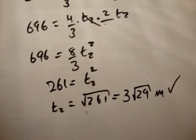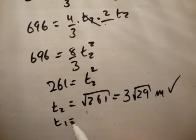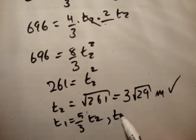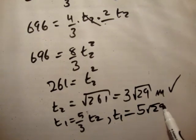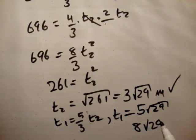Alright, so we have an expression for T2. Now how do we relate T2 and T1 again? We said that T1 was equal to 5 over 3 times T2. So as a result, T1 is equal to 3 root 29 multiplied by 5 divided by 3 is equal to 5 root 29. So the total time is 3 root 29 plus 5 root 29 and is equal to 8 root 29. And that's exactly what we have in the back of the book. And that's what we're asked to find.